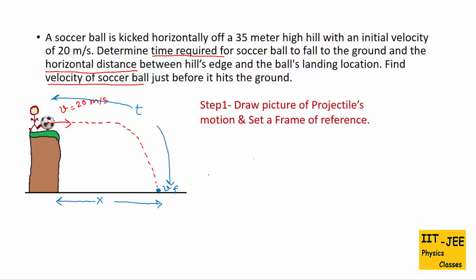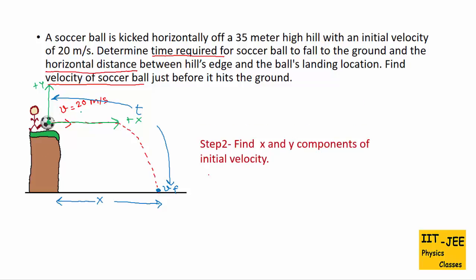Now we set a frame of reference. We always take the initial point as the origin. The direction of the ball's motion is the positive direction — so right is the positive x-axis and up is the positive y-axis. Down is the negative y direction and left is the negative x direction. Since the ball is launched horizontally, it is given only a horizontal velocity: v₀x equals 20 meters per second and v₀y equals 0, because the ball is not given any vertical velocity.